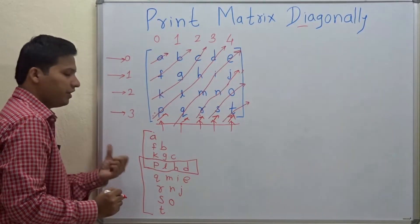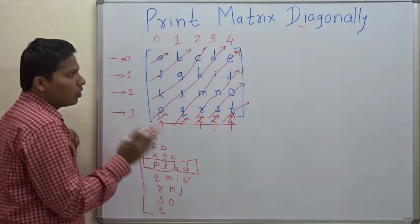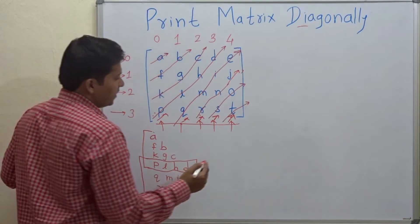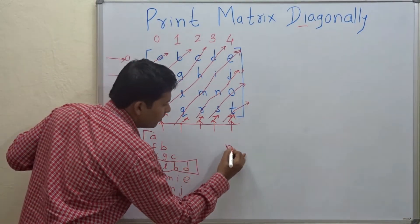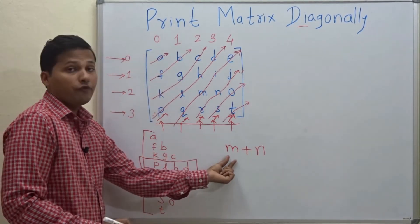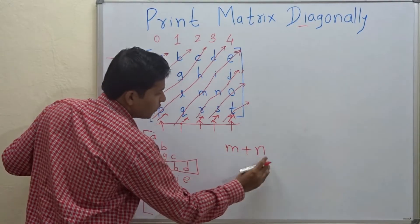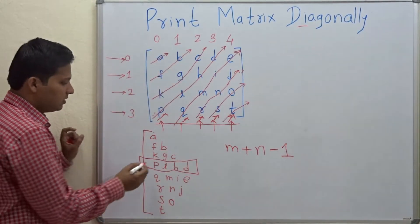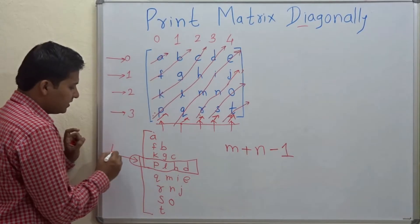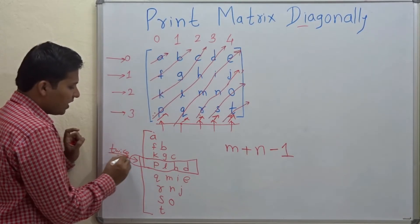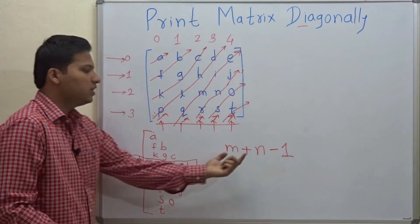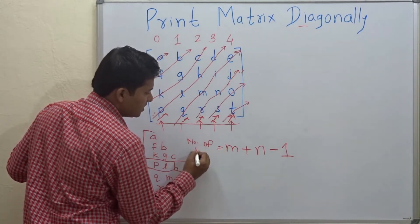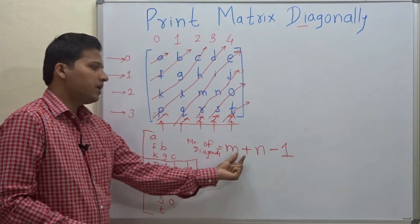The formula for the number of diagonals in a matrix when printing diagonally is M plus N, where M is the number of rows and N is the number of columns. It becomes M plus N minus 1 because one diagonal is counted twice, so we reduce 1 from the total. That gives us M plus N minus 1.